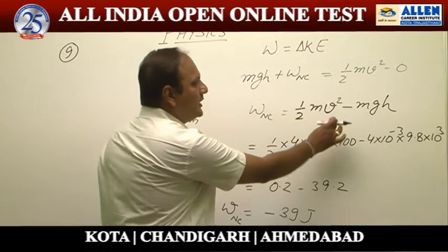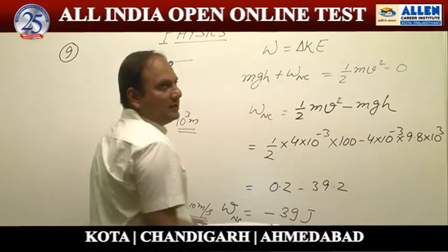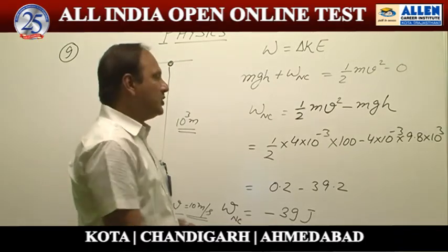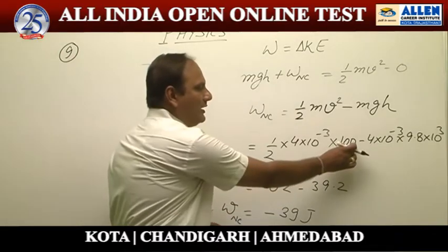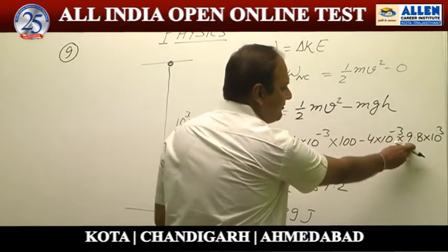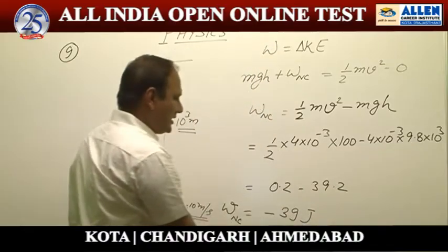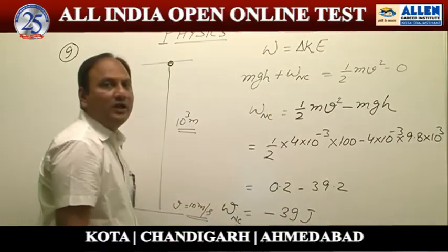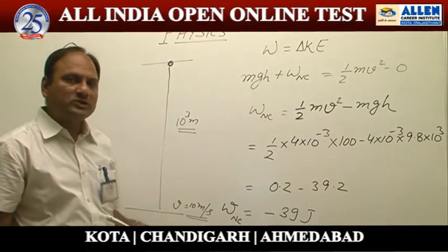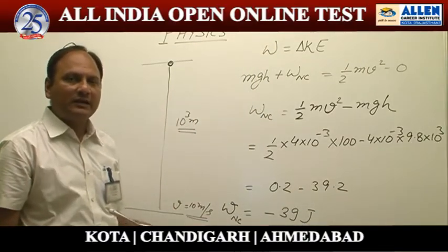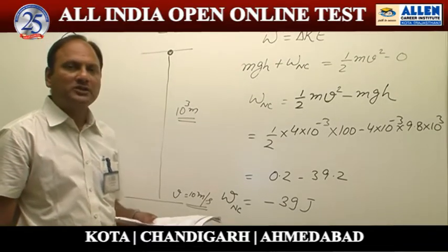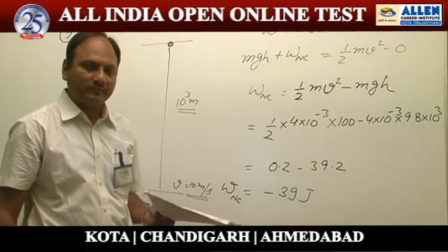Placing the values: mass of the drop is 4 grams = 4×10⁻³ kg, speed is 10 m/s so its square is 100. Placing values in mgh, we get work done by viscous force equal to −39 joules. So the answer is option number 3.